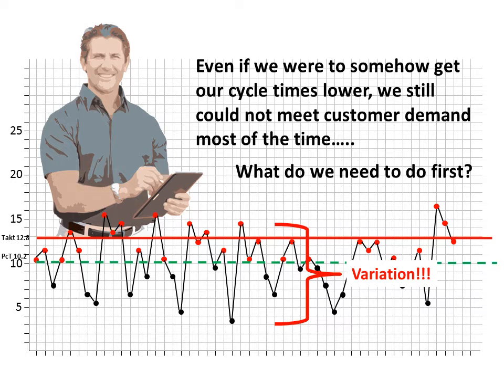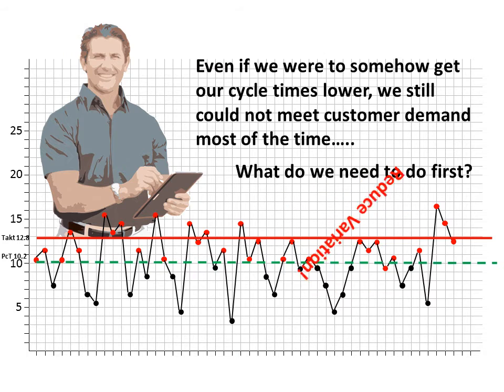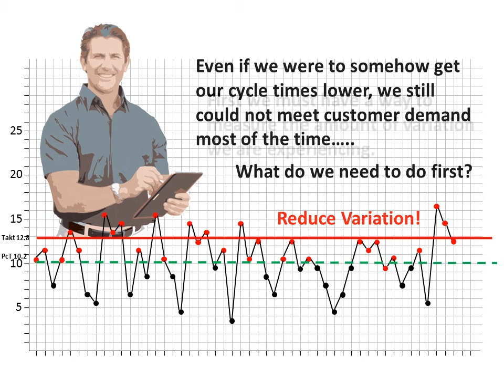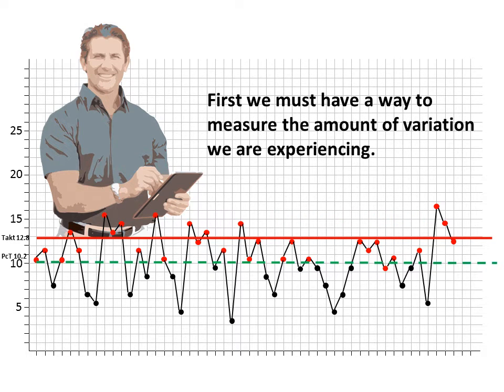What do we need to do first? You've probably made the same conclusion: we must reduce variation. Only by first addressing and reducing the variation in the process do we lay the foundation for significant improvement. If we're going to first reduce variation, we must have a way to measure the amount of variation we are experiencing. This will help us to see what we currently have and what we need to achieve our goals, and eventually measure progress towards that goal.